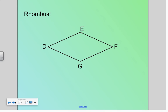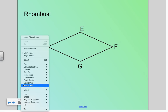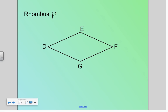A rhombus. Does anybody know how to define a rhombus? It is a parallelogram. A parallelogram has two sets of equal angles already, so that doesn't change anything from a parallelogram. We know it's a parallelogram, so I'll write that down so far. It's a parallelogram.